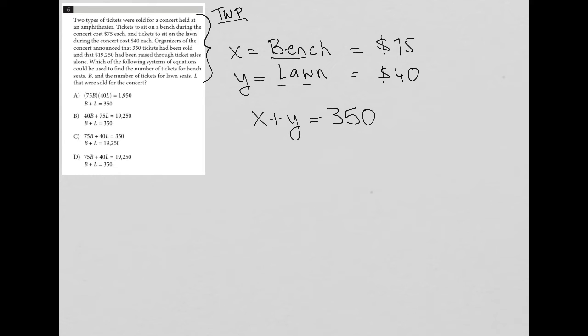Then they go on to tell us how much money was raised. So I know that for every bench ticket, if I multiply that by 75 and I add that to 40 times the number of lawn tickets—again, these numbers representing the cost per ticket—then that number should add up to the $19,250.